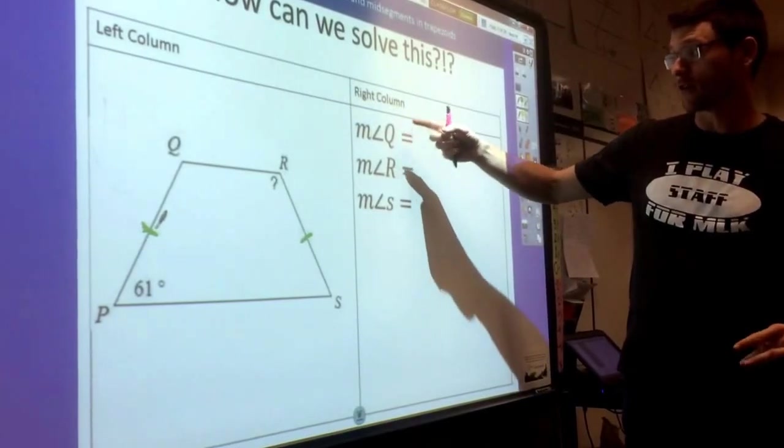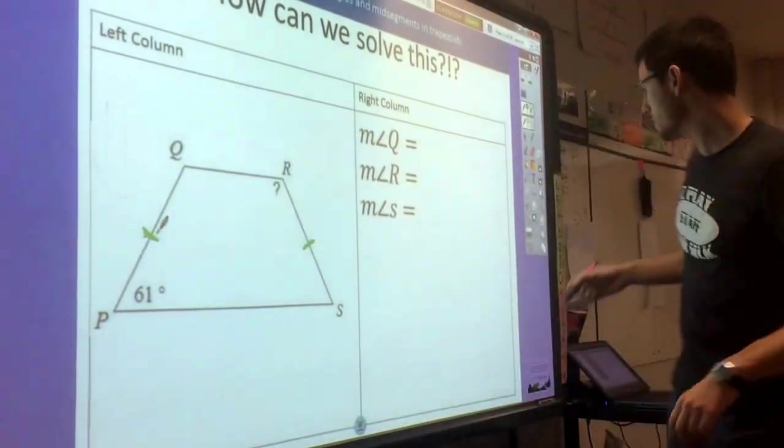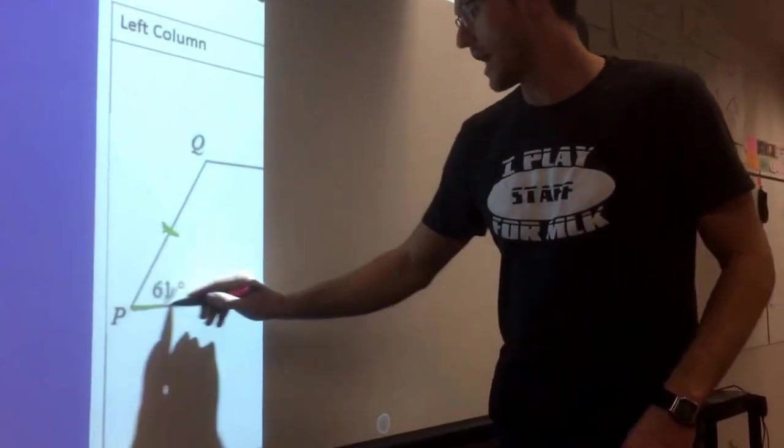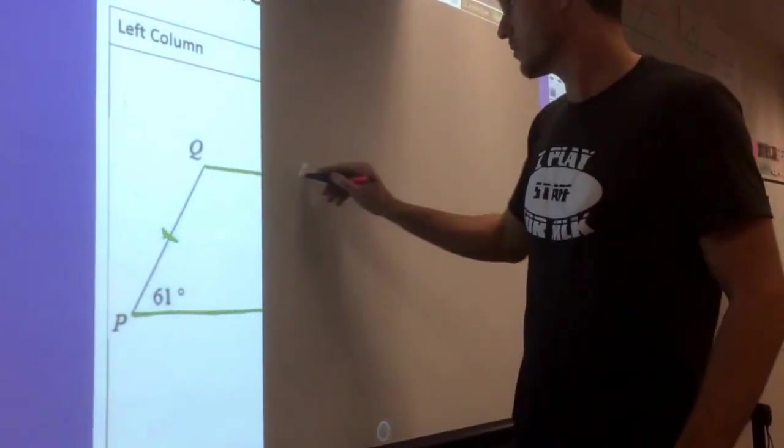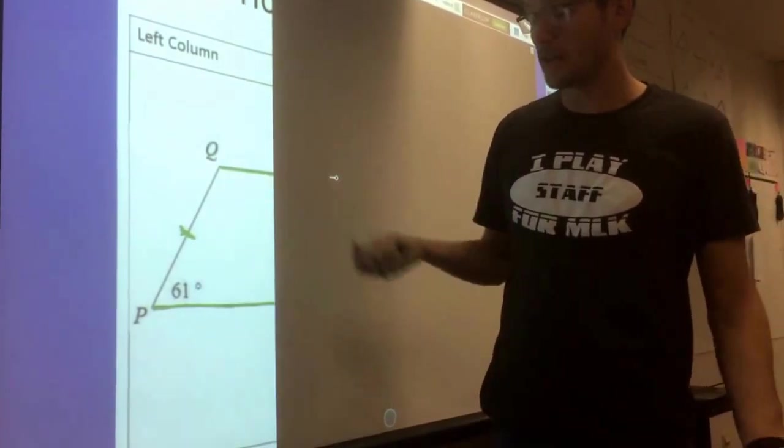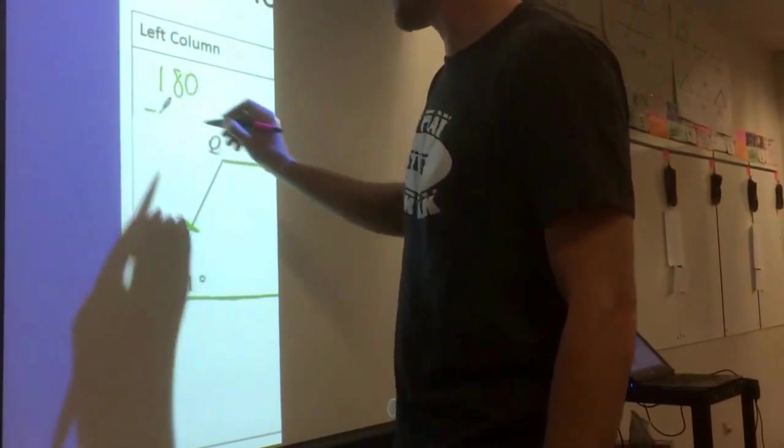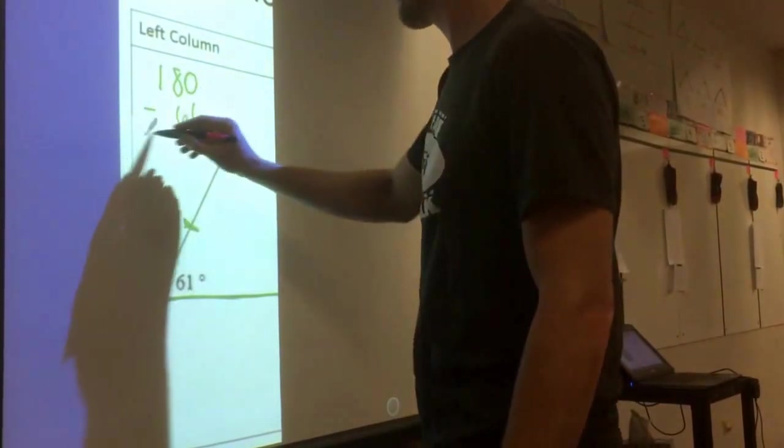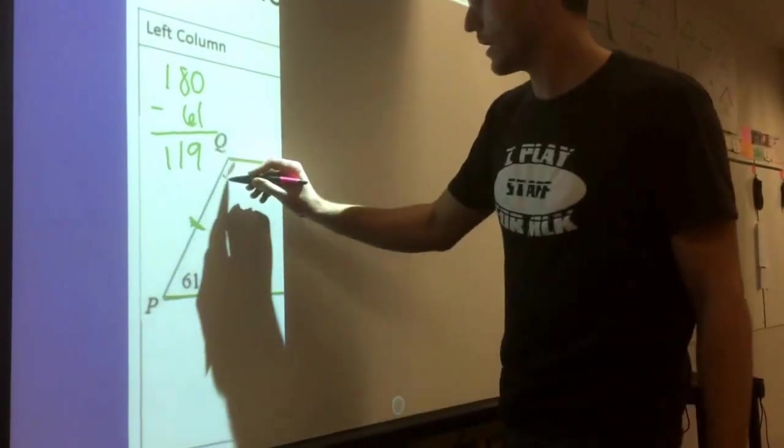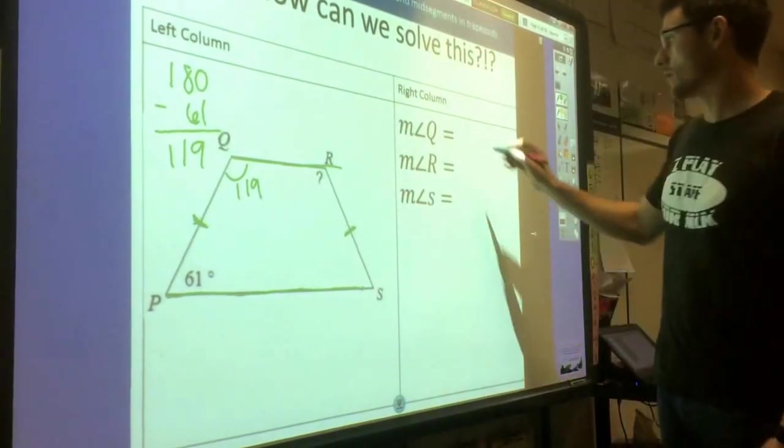So this one asks us to find measure of angle Q, R, and S, all three of the missing angles. If I have two angles that are next to our parallel lines and in between those bases, these two angles here have to add up to 180. So if I want to find that out, I'm just going to do 180 minus 61, and we're going to find out that this is 119. So angle Q is 119.